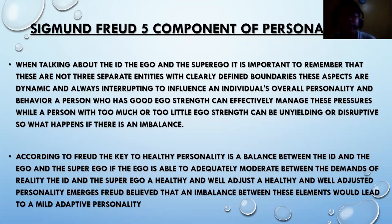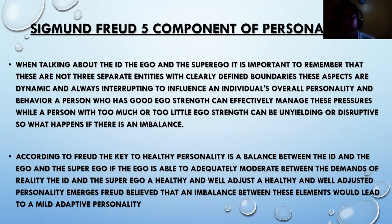When talking about the Id, Ego, and Superego, it is important to remember that these are not three separate entities with clearly defined boundaries. These aspects are dynamic and always interacting to influence an individual's overall personality and behavior. A person with good ego strength can effectively manage these pressures, while a person with too much or too little ego strength can be unyielding or disruptive. According to Freud, the key to a healthy personality is a balance between the Id, Ego, and Superego. An imbalance between these elements would lead to a maladaptive personality.